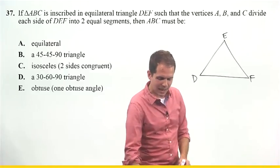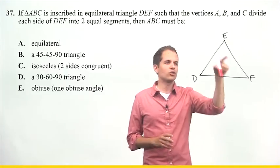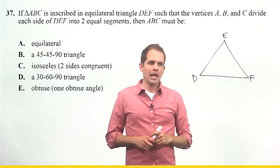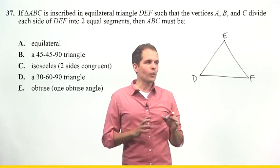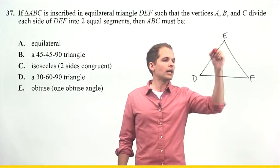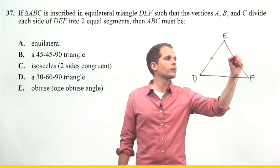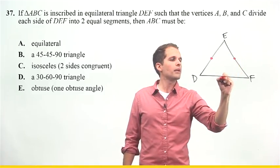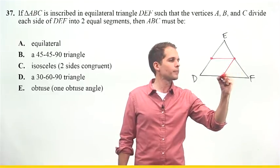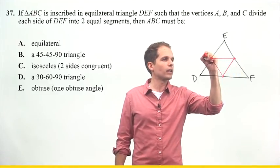Then it tells me ABC is inscribed in this triangle. Now, inscribed is just a fancy word meaning written inside of. And it says that it's done in such a way that the vertices, which is another fancy word that just means corners, cut each of these sides in half. So, I can draw the midpoints of each of the sides, connect them, and I'll get my triangle ABC.